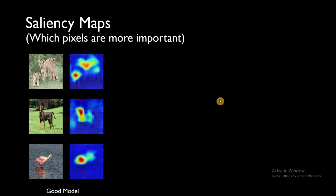Let's see what saliency maps are. Here we have some pictures passed through a deep neural network like VGG16 or ResNet, and from their output these explanations are created. A saliency map gives you an idea of what each pixel in your input data is contributing to the output class of the neural network. If your output class is 'lion', you can see which part of the input the neural network is looking at when it says this belongs to the lion class.